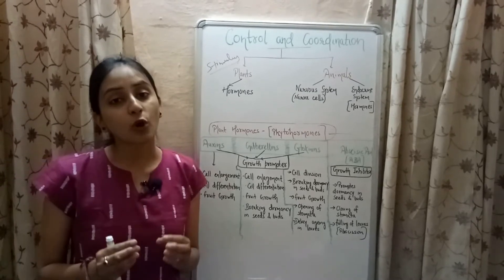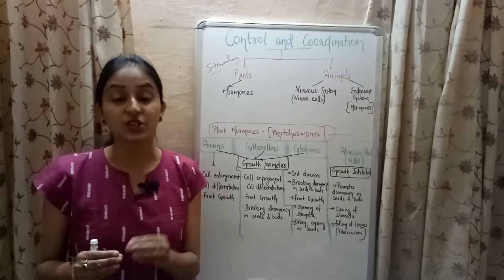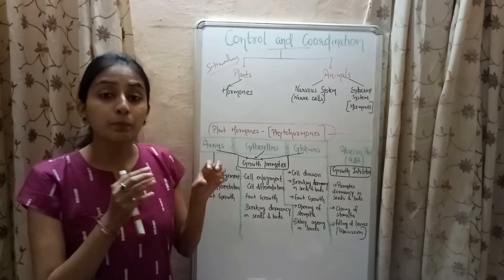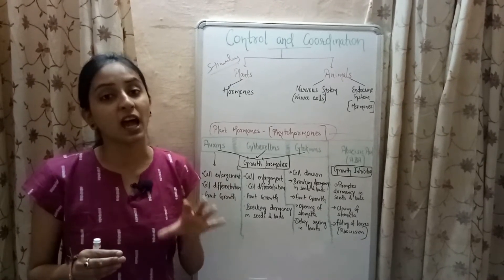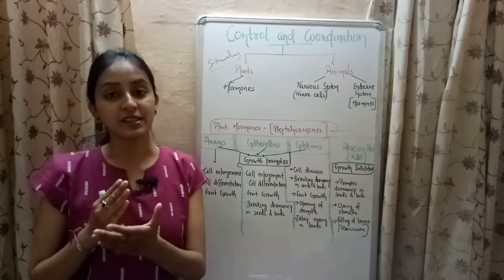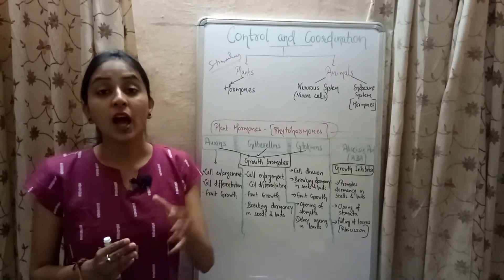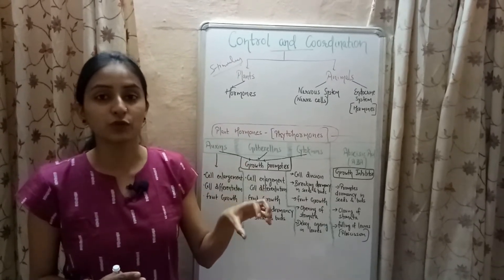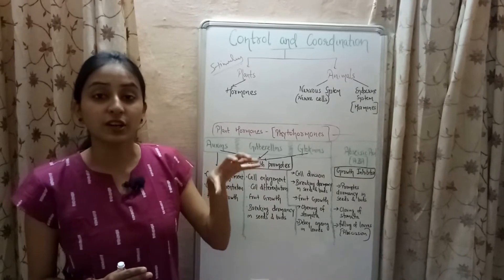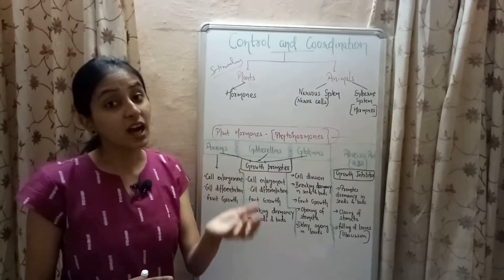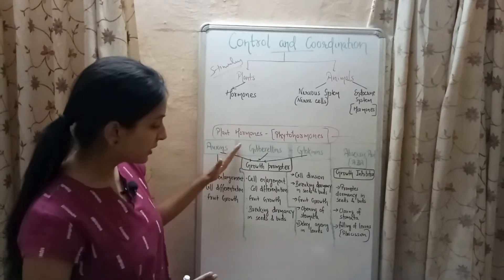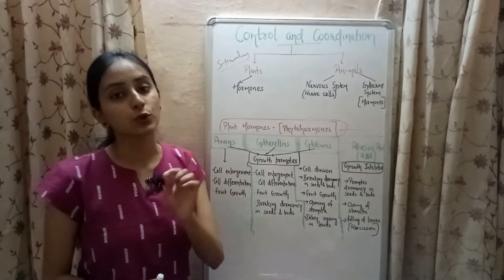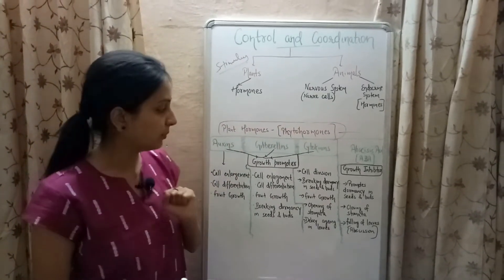Dormancy is an inactive or resting stage of the plant in which parts of the plant are not active at all. Gibberellin is the hormone that breaks this resting stage so that the part of the plant which was in the resting stage can again start growing.